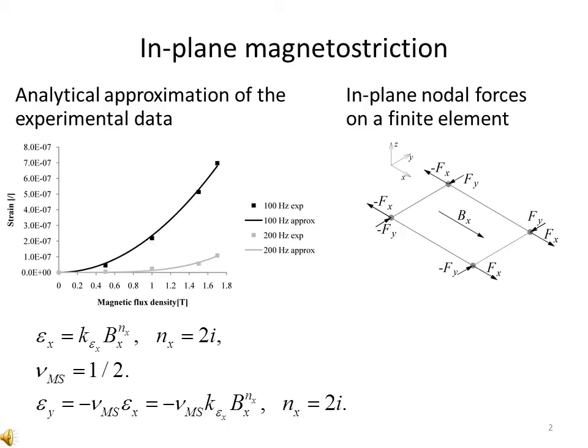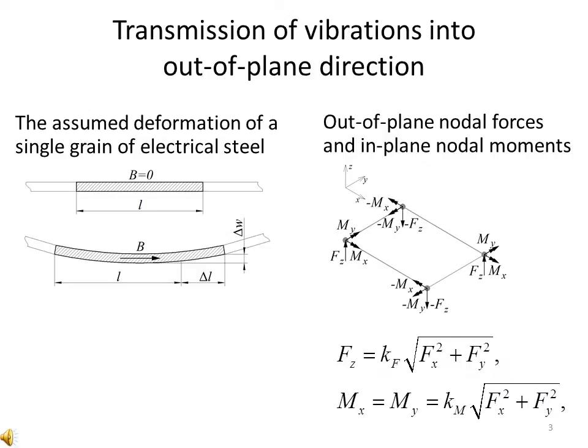Using the solution for the magnetic field together with the introduced approximation, in-plane magnetostrictive forces can be computed to represent the effect of magnetostriction on the in-plane vibration of finite elements. The heterogeneous grain structure of electrical steel is assumed to be the source of the coupling between the in-plane and the out-of-plane direction. Namely, the differences in magnetostriction between individual grains are assumed to generate out-of-plane deformation together with the in-plane magnetostriction. This transmission of vibrations is modeled by the introduction of out-of-plane nodal forces and in-plane nodal moments. A generalized linearization is established between the excitation mechanisms in the two directions and calibrated based on experimental data.